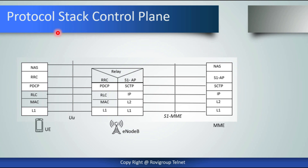The protocol stack control plane: between the UE and the MME, we have the NAS — Non-Access Stratum — which forms the highest stratum of the control plane at the radio interface. It supports session management procedures to establish and maintain IP connectivity between the UE and the PDN gateway, and supports mobility of the UE. NAS security is an additional function, providing integrity protection and ciphering of NAS signaling messages.